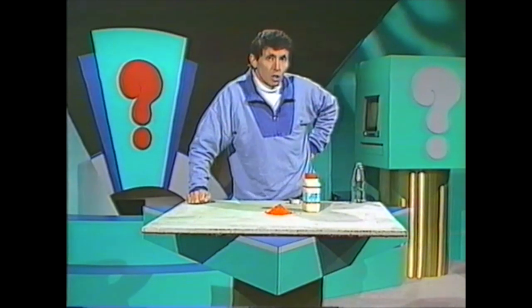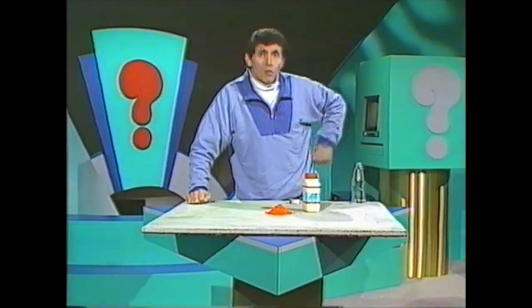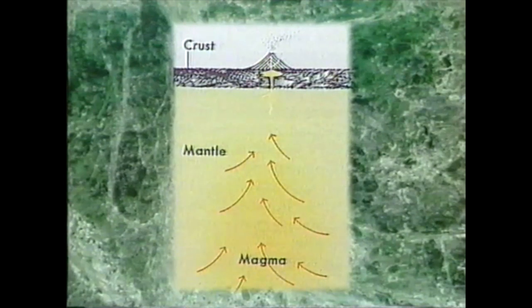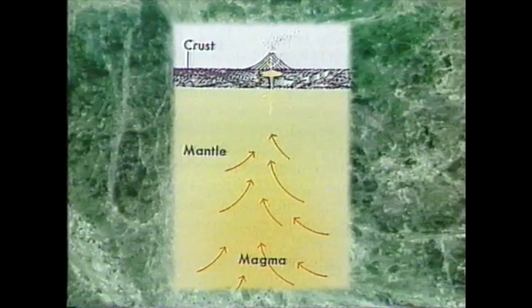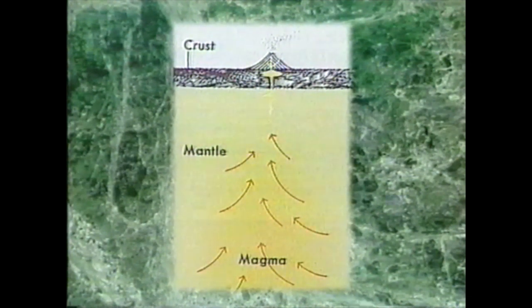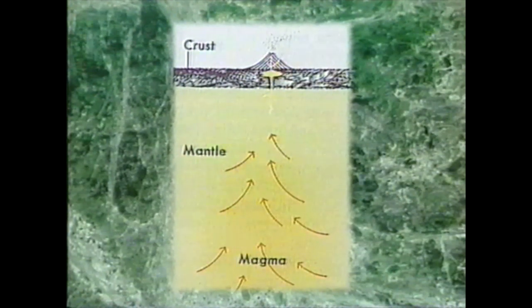We could understand volcanoes a little better if we could see underneath the ground, but we can't — but we can look at diagrams. If you could go down 50 or a hundred kilometres below the earth's surface, in many parts of the earth, you'd find magma — molten rock — and above this, solid rock, the mantle, and then the earth's crust.